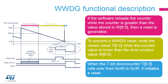This diagram illustrates how the window watchdog operates. When the 7-bit down-counter rolls over from 0x40 to 0x3F, it initiates a reset. This happens if the application software does not refresh the window watchdog on time. The early interrupt, if enabled, can be generated when the down-counter reaches 0x40. If the software refreshes the watchdog while the down-counter is greater than the values stored in bits W[6:0], a reset is generated.